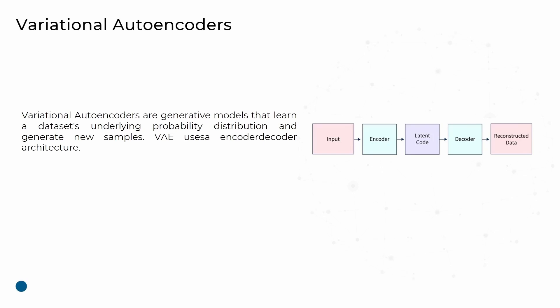Next is the decoder part. The decoder takes points from the latent space - sampled from the distribution - and reconstructs them back into the original data space. By sampling different points from the latent space, the decoder can generate new data samples that are similar to the training data but not exact copies.